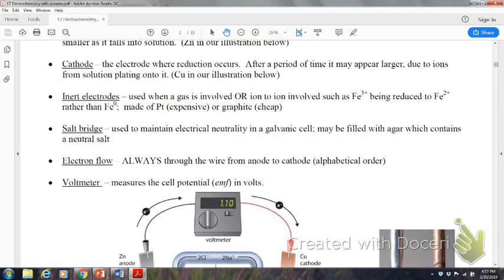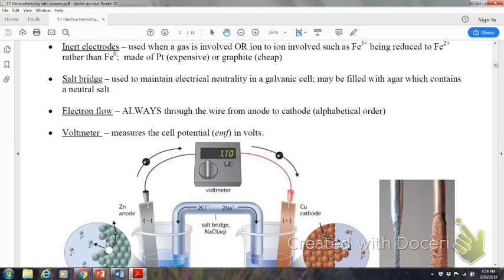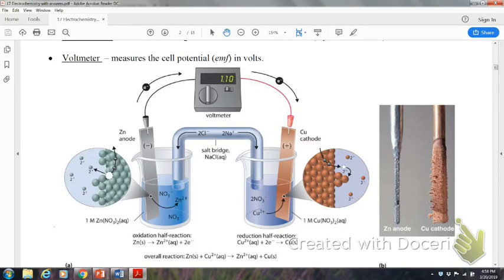The electron flow always goes anode to cathode. That's alphabetical order. That makes it easy to remember. The voltmeter is what's going to measure the cell potential in EMF, which is in volts. So, here we have zinc and copper. Zinc is being oxidized, and copper is being reduced. So, what's going to happen is those anodes send the electrons over to the cathode. The electrons are going to deposit, and the cathode is always going to get bigger. And, of course, we have an acronym to help you remember that, and that is FATCAT.